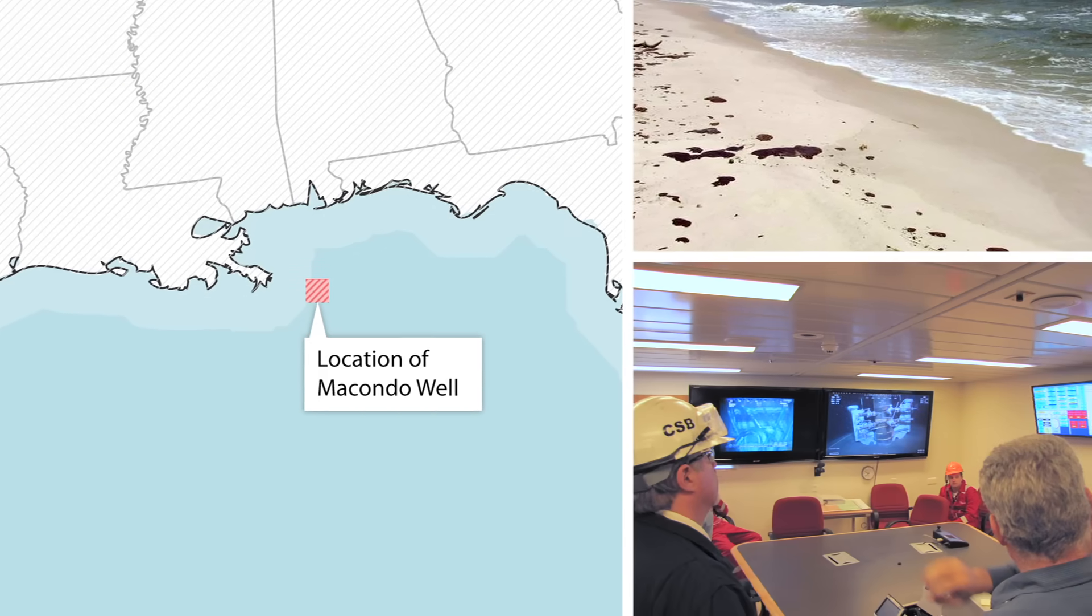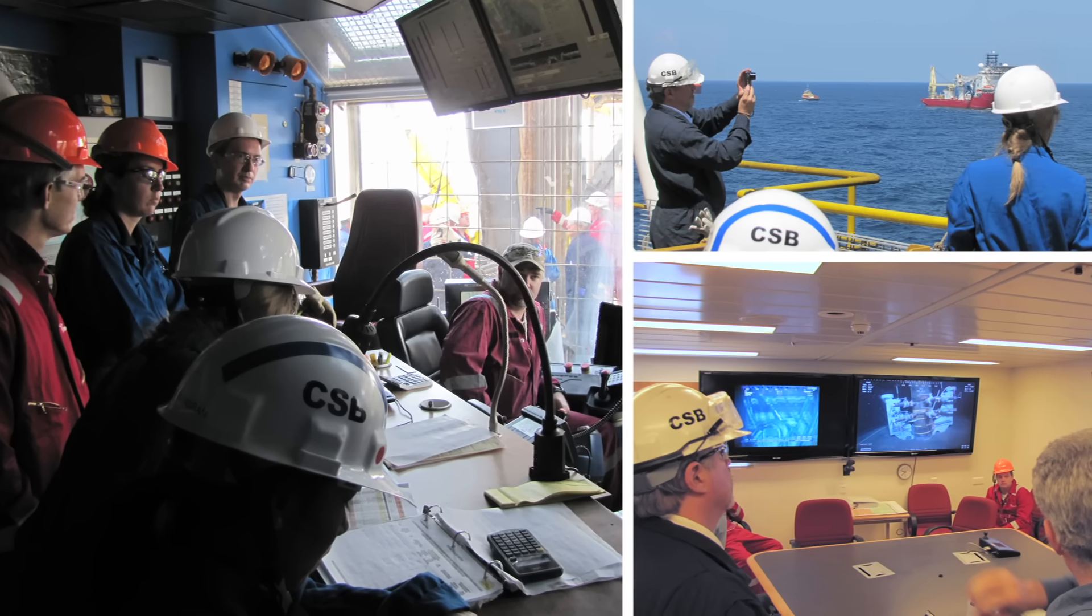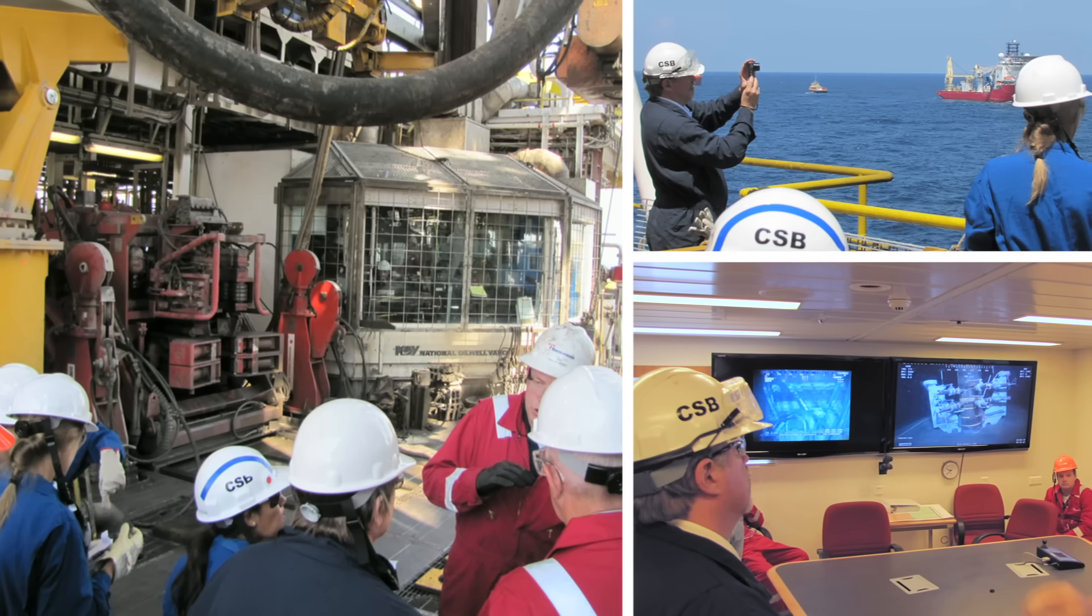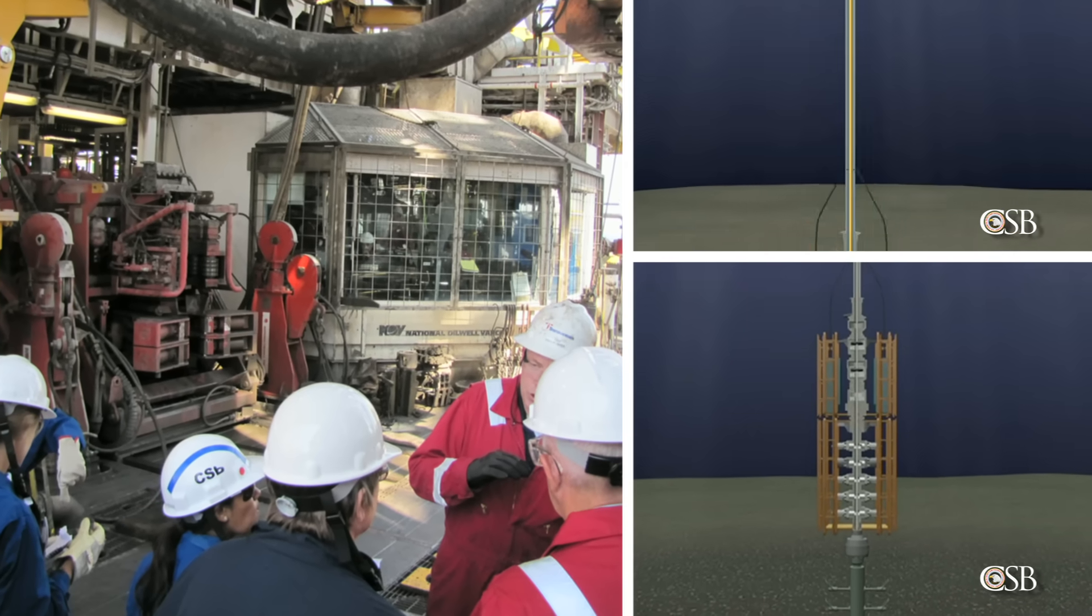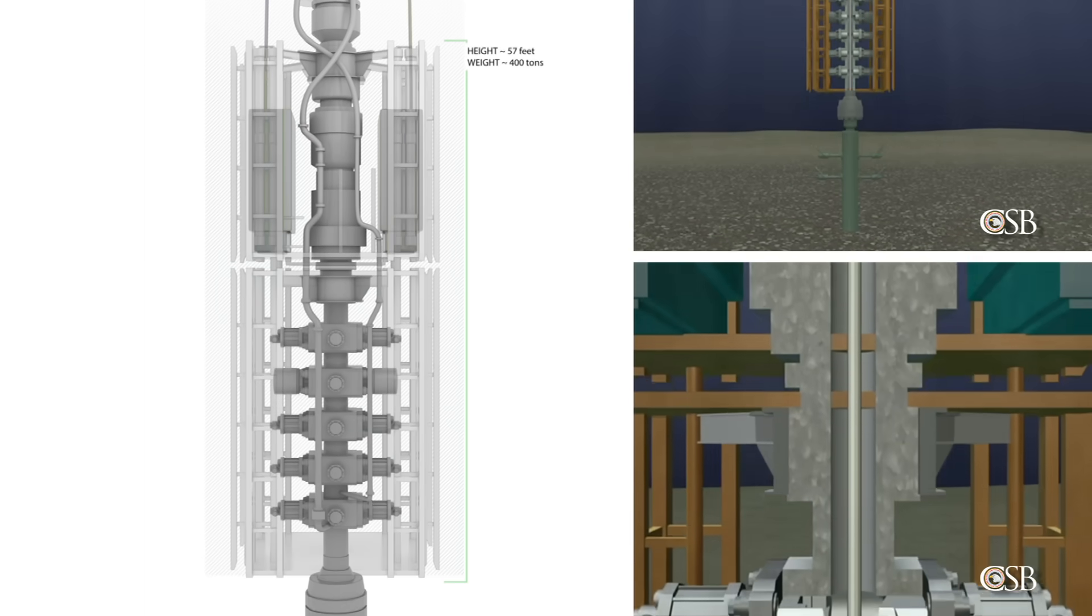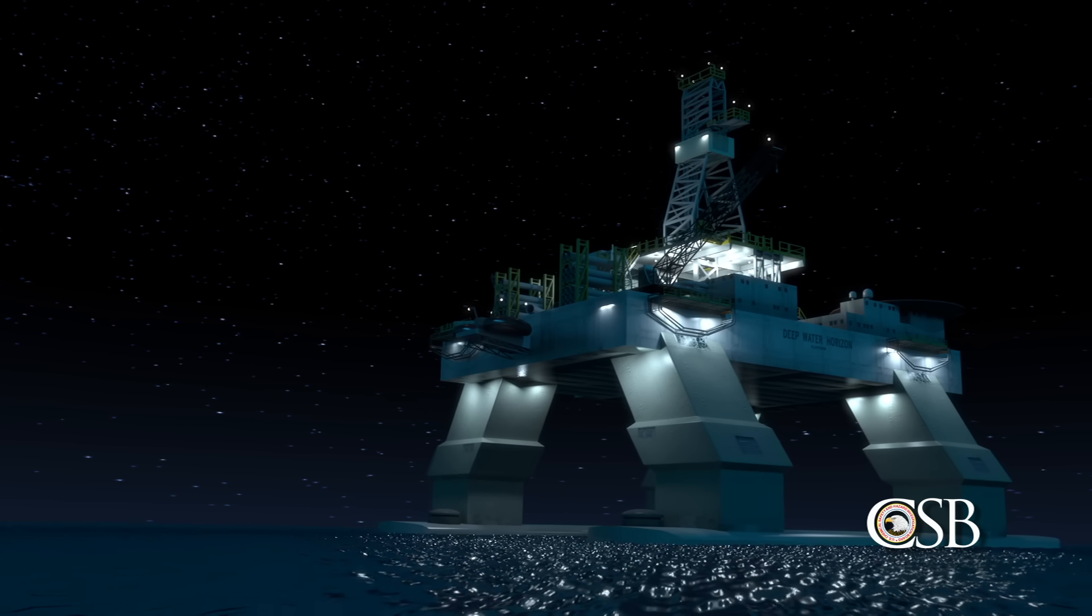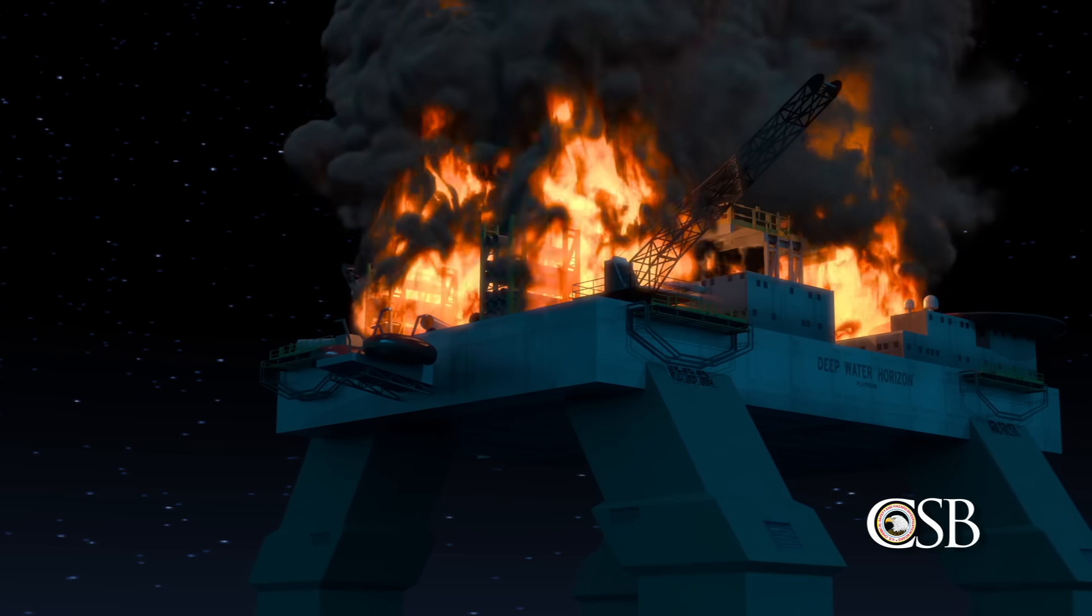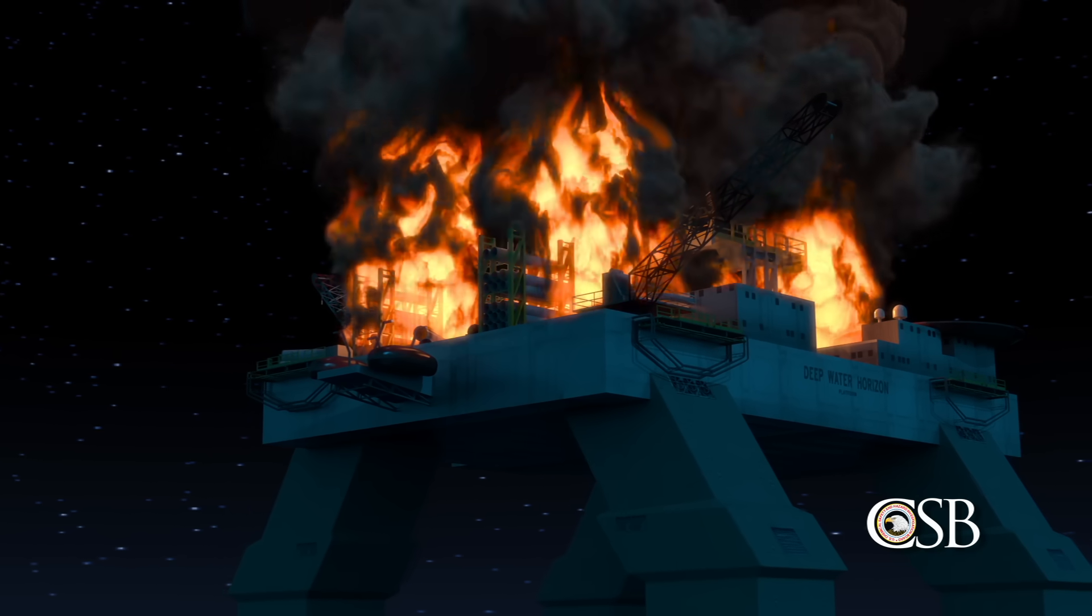In 2010, the CSB launched an investigation to examine the technical, organizational, and regulatory factors that contributed to the accident. During the investigation, the CSB made new findings about why a key piece of safety equipment, the Deepwater Horizon's blowout preventer, failed to seal the well during the emergency. These new findings help explain why the accident was so devastating, and the CSB cautioned that other blowout preventers currently in use could fail in similar ways.